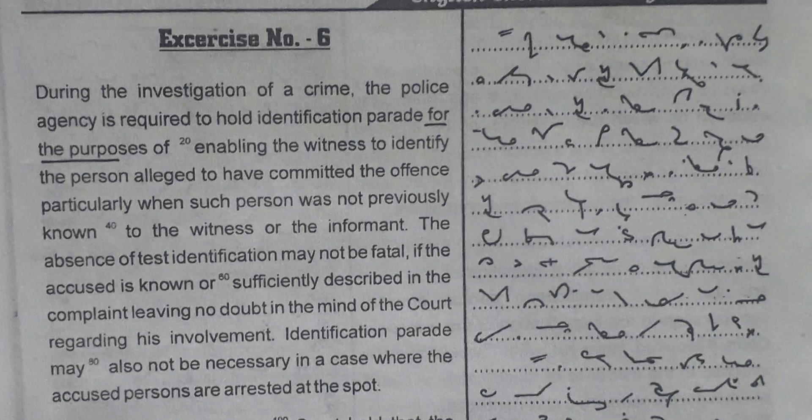During the investigation of a crime, the police agency is required to hold an identification parade for the purposes of enabling the witness to identify the person alleged to have committed the offence, particularly when such person was not previously known to the witness or the informant. The absence of test identification may not be fatal if the accused is known or sufficiently described in the complaint, leaving no doubt in the mind of the court regarding his involvement.